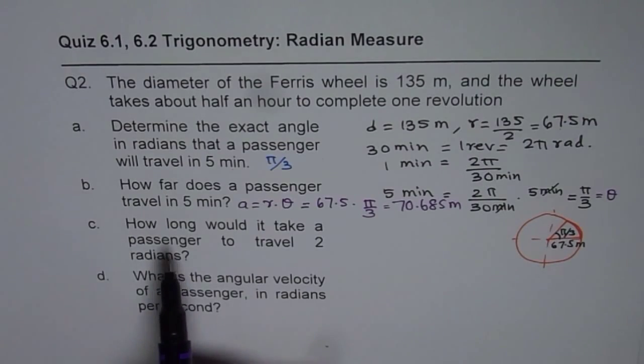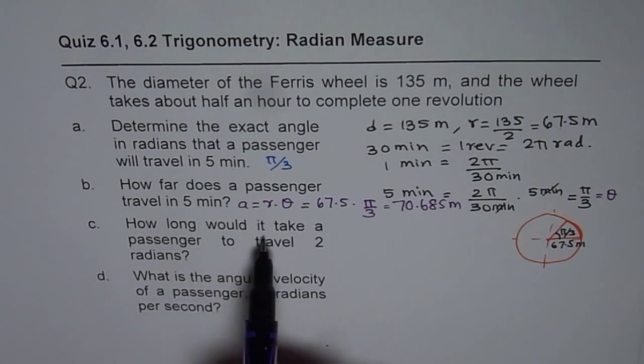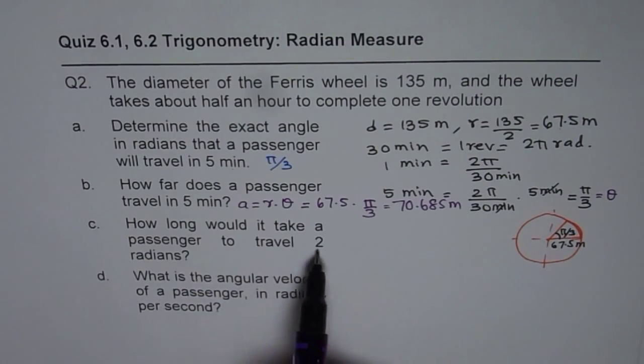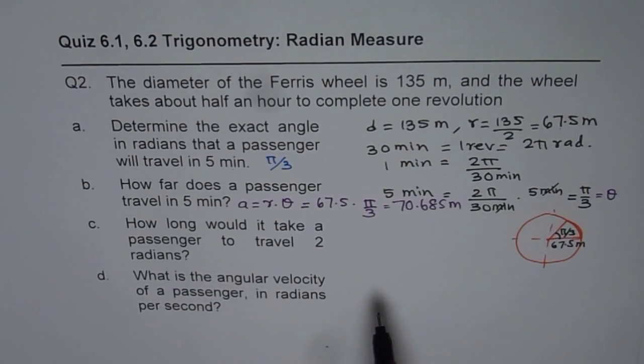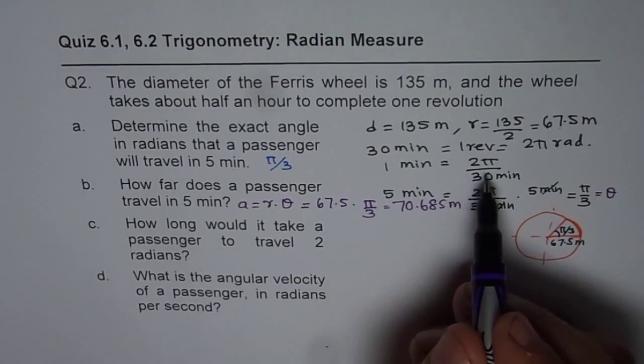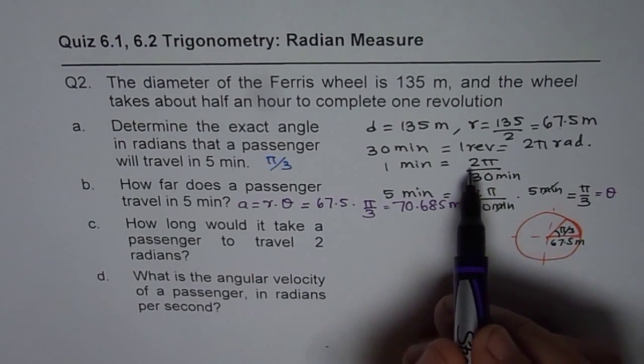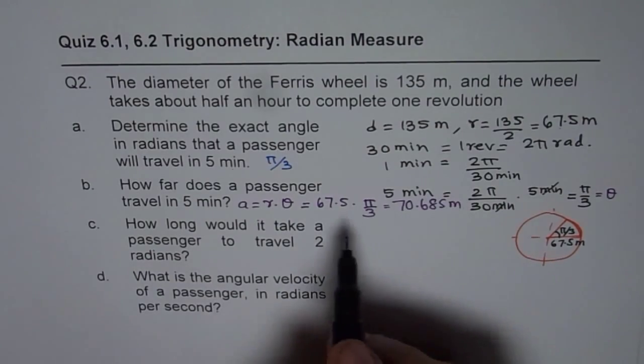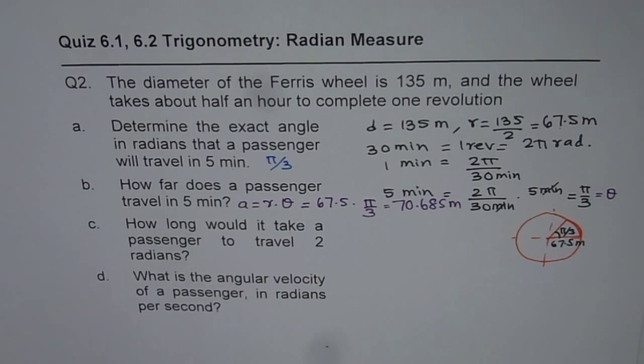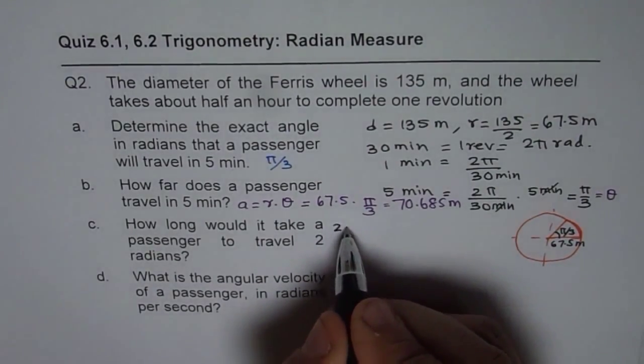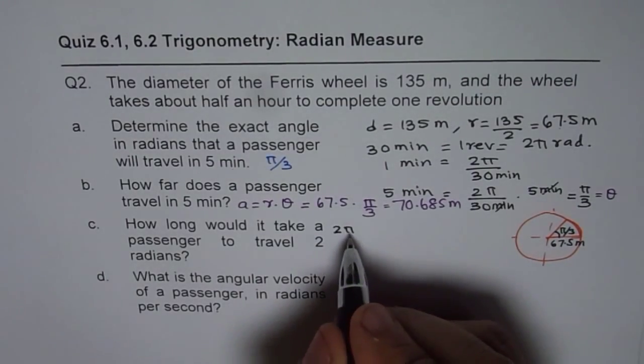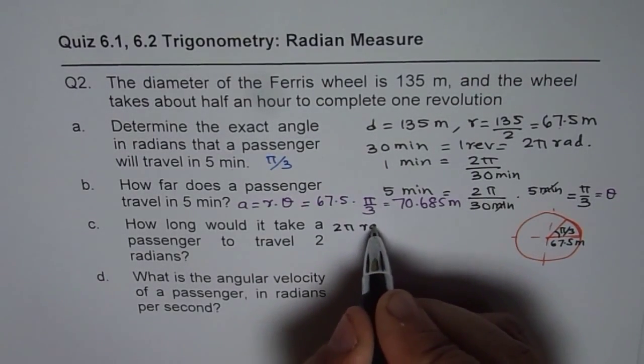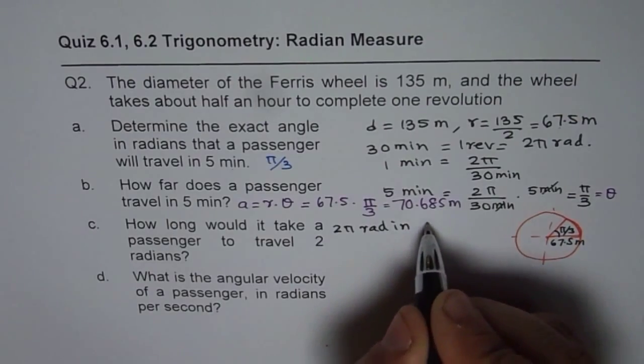Part C is how long would it take a passenger to travel two radians? Now, as you can see, it takes 2π radians in 30 minutes. So this we can solve in a manner like this: 2π is one circle, 2π radians in 30 minutes.